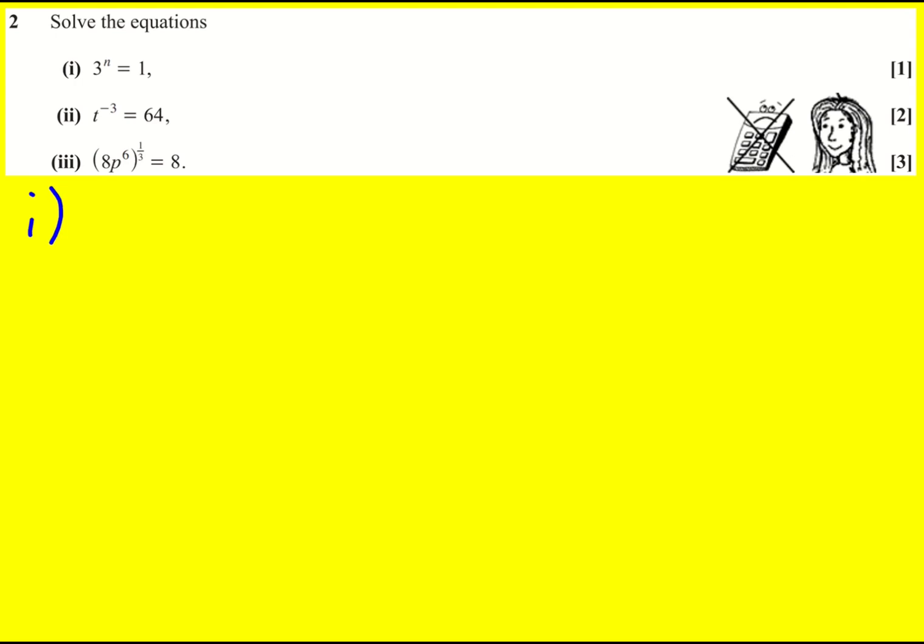In part one of this question we're asked to think what do we raise 3 to the power of to give 1? And the answer is 0. So try and remember that 4 to the 0 is 1, 5 to the 0 is 1, basically anything to the power of 0 is 1.